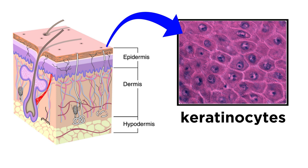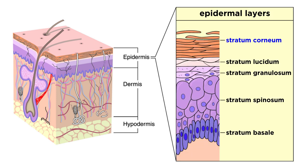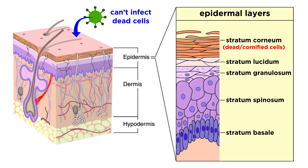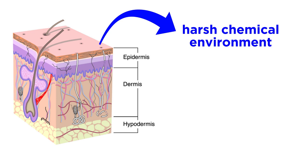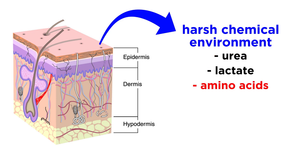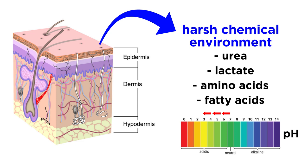The skin itself is made up of multiple layers of specialized epithelial cells called keratinocytes. The 15 to 20 outermost layers of keratinocytes make up the region known as the stratum corneum, named as such because these keratinocytes have undergone a form of programmed cell death called cornification. Having multiple layers of dead cells as the outermost barrier helps protect against viral infections, as viruses need to infect living cells in order to proliferate. The stratum corneum also houses a harsh chemical environment including urea, lactate, amino acids, and fatty acids, all of which contribute to an acidic environment. Not only does the low pH discourage microbial colonization, but some defensins actually function optimally at a lower pH.